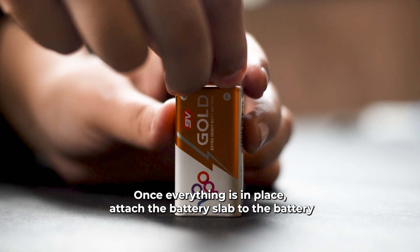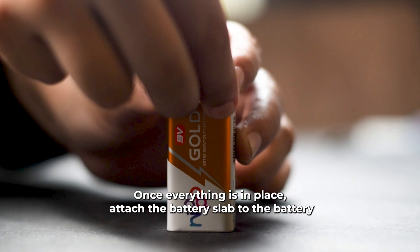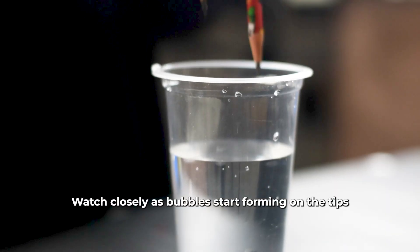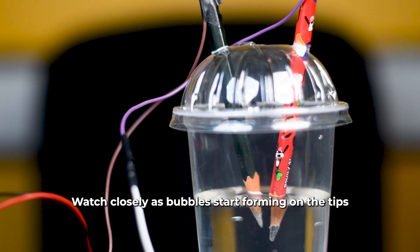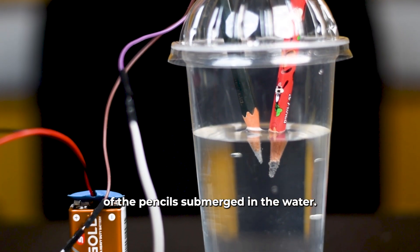Once everything is in place, attach the battery snap to the battery. Watch closely as bubbles start forming on the tips of the pencils submerged in the water.